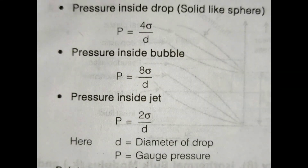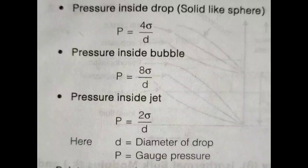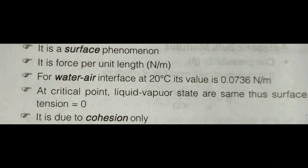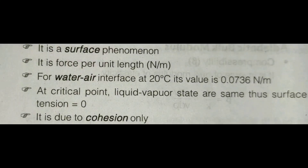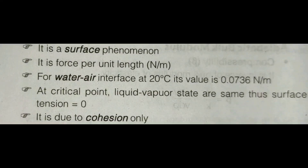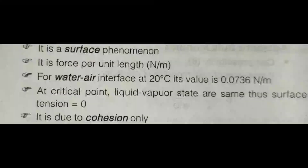Here, d is the diameter of the drop and p is the gauge pressure. These equations are very important in fluid mechanics. Surface tension is a surface phenomenon and is defined as force per unit length, that is newton per meter. For a water-air interface at 20 degrees Celsius, its value is 0.0736 newton per meter. At the critical point, liquid and vapour states are the same, so surface tension equals zero. It is due to cohesion only.